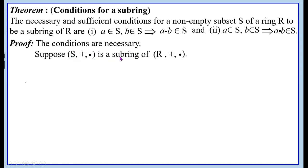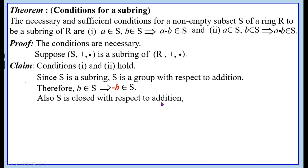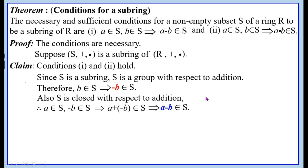The conditions are necessary. Suppose (S, +, ·) is a sub-ring of (R, +, ·). We have to show that conditions 1 and 2 are true. Since S is a sub-ring, S is a group with respect to addition. Therefore, B belongs to S implies minus B belongs to S — that is, inverse exists for every element in S with respect to addition. Also, since S is closed with respect to addition, A belongs to S and minus B belongs to S implies A plus (minus B), which is A minus B, belongs to S. Thus the first condition is satisfied.